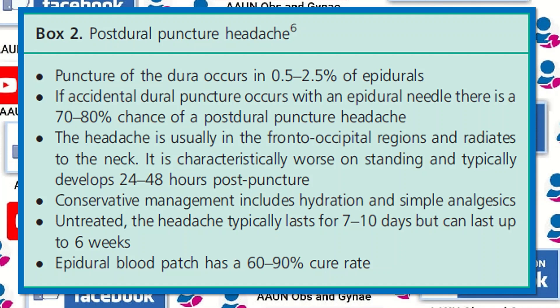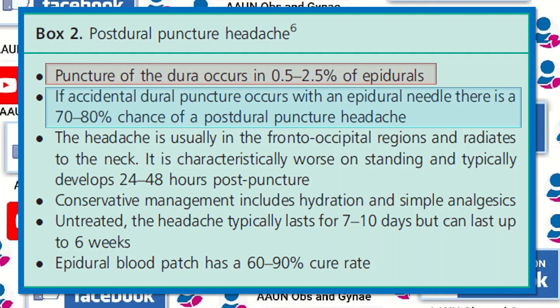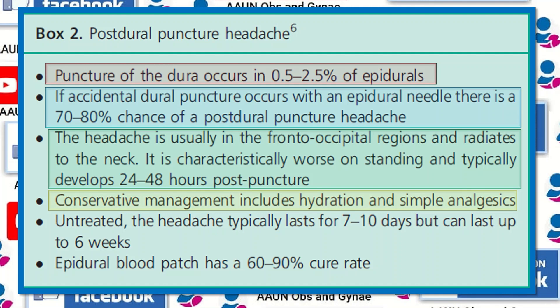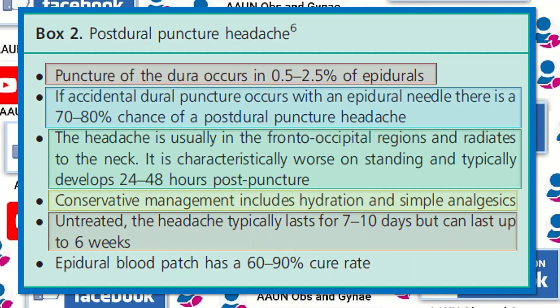According to that article, post-dural puncture headache occurs when the dura is punctured in 0.5 to 2.5 percent of epidurals. If an accidental dural puncture occurs with an epidural needle, there is a 70 to 80 percent chance of developing post-dural puncture headache. The headache is usually in the frontal and occipital regions and radiates to the neck, typically worse on standing and developing 24 to 48 hours post-puncture. Conservative management includes hydration and simple analgesics. Untreated headaches typically last 7 to 10 days but can last up to 6 weeks. The epidural blood patch has a 60 to 90 percent cure rate.